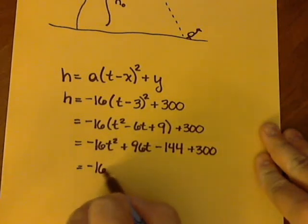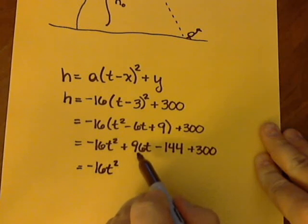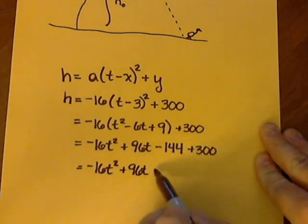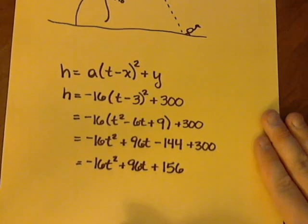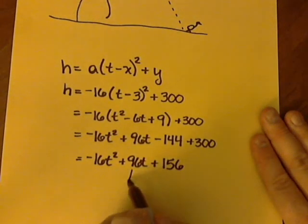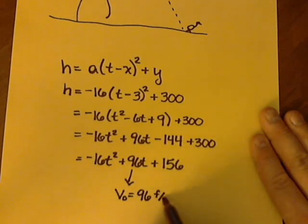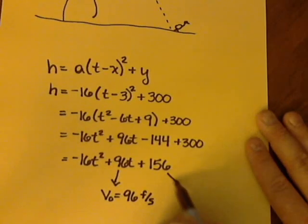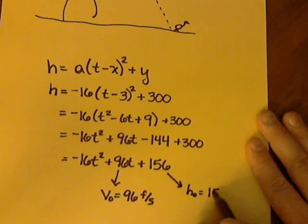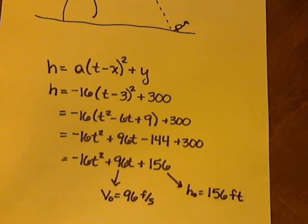And then we just simplify. So 96T plus 156. Now that it's in the regular form, we know that the number with the T is our initial velocity. So we know he took off at 96 feet per second. And we know that the number here on the end is our initial height. So this tells us that the cliff was 156 feet high.